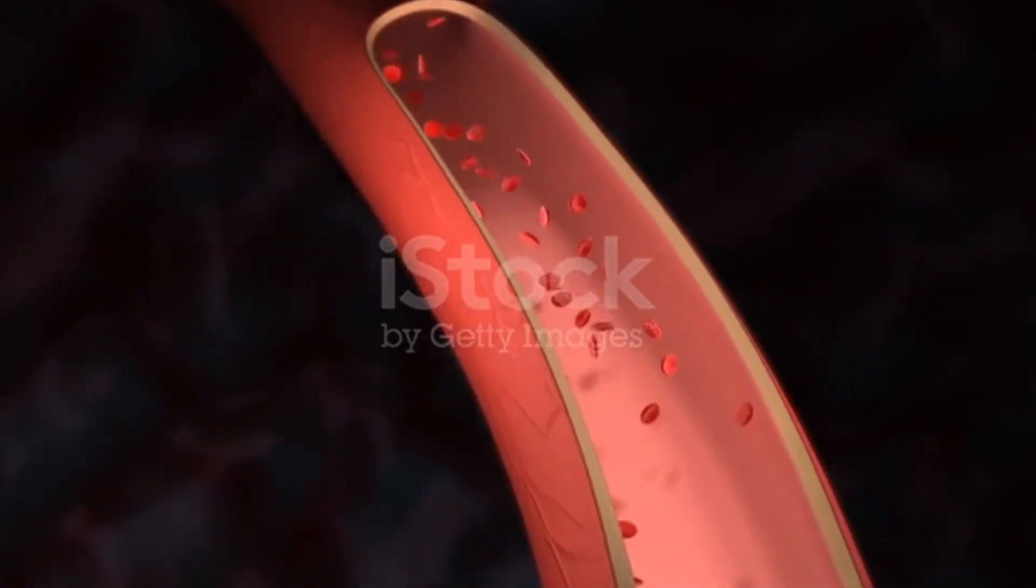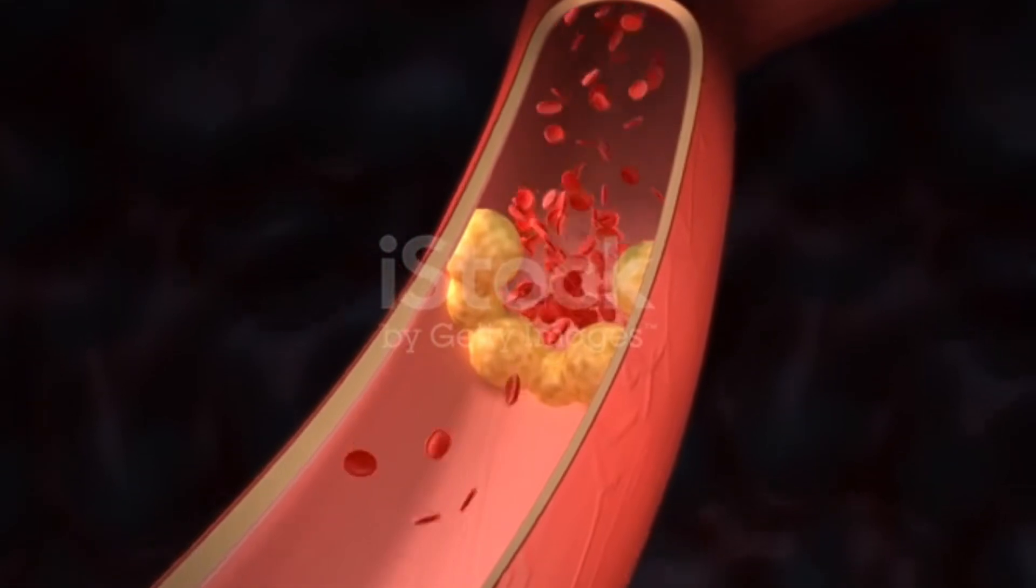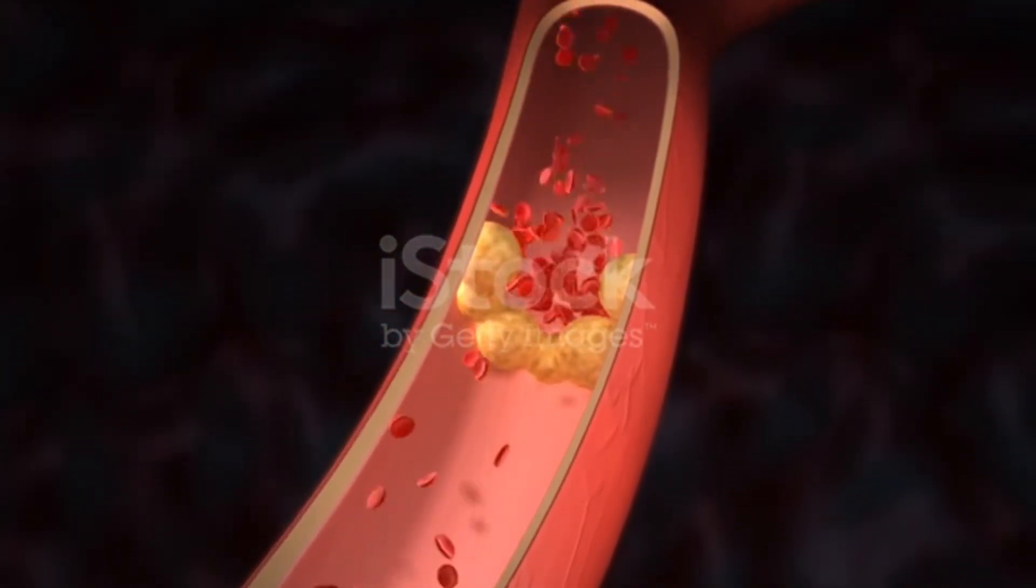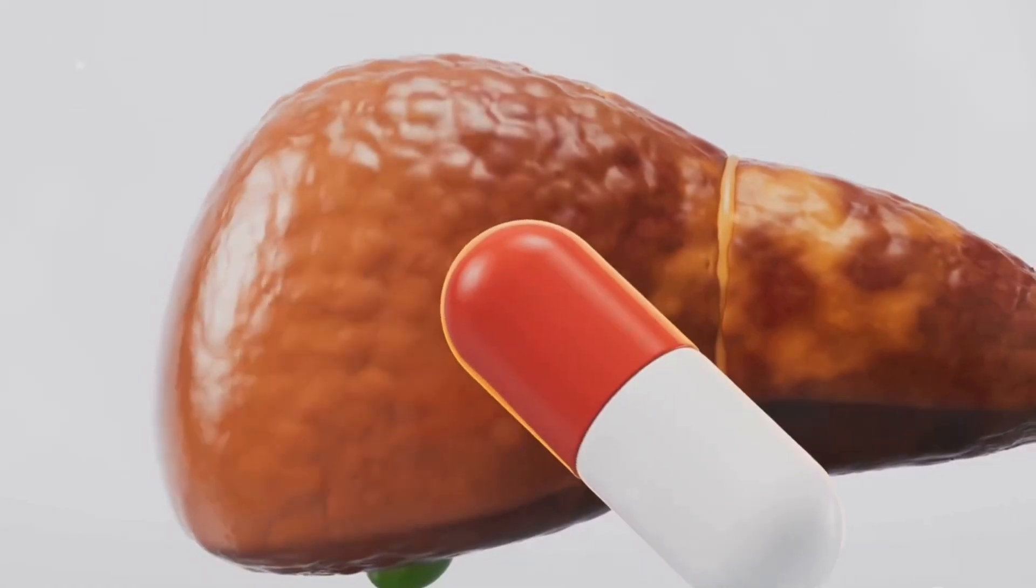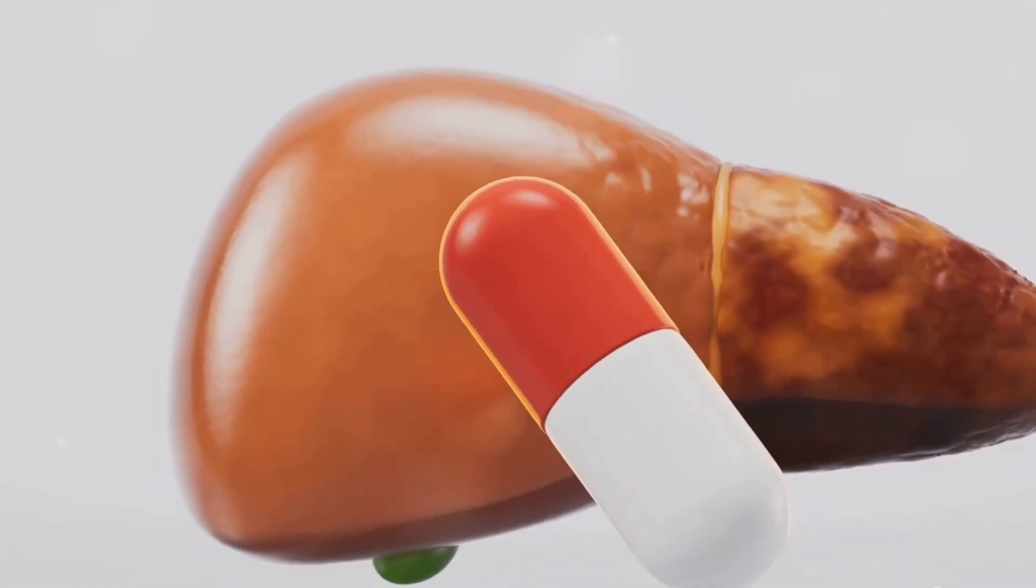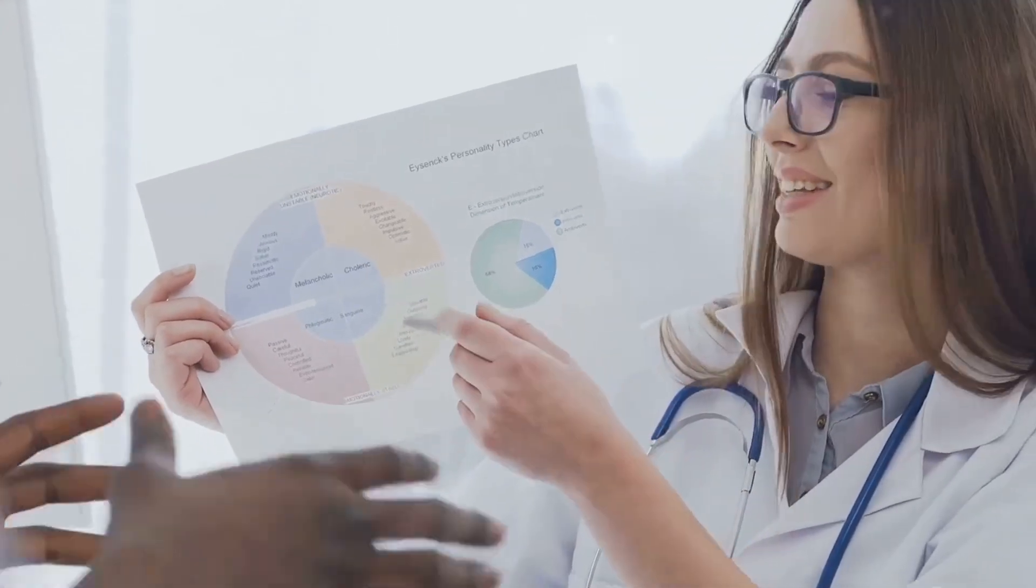High cholesterol is often the culprit behind xanthalasma. This condition manifests as yellowish deposits around your eyes, and it's more than just a cosmetic concern. Cholesterol travels through your bloodstream in packages called lipoproteins. These lipoproteins are essential for transporting cholesterol to various parts of your body where it's needed. There are two main types: LDL or low-density lipoprotein and HDL or high-density lipoprotein. Each type plays a different role in your body's cholesterol management.